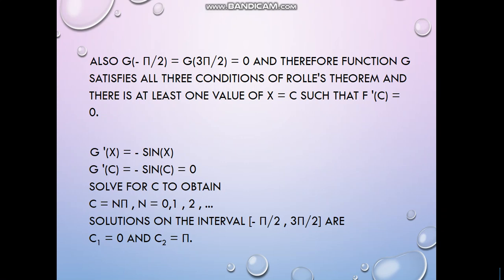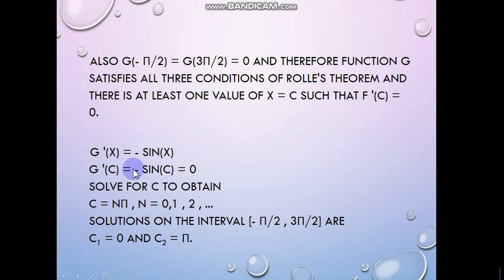Now we find the value of c. At the endpoints, we check f(−π/2) and f(3π/2) to confirm they are equal, so that f'(c) = 0 is justified. The derivative of cos(x) is −sin(x). Setting −sin(c) = 0 means sin(c) = 0, so c = nπ for integer n.